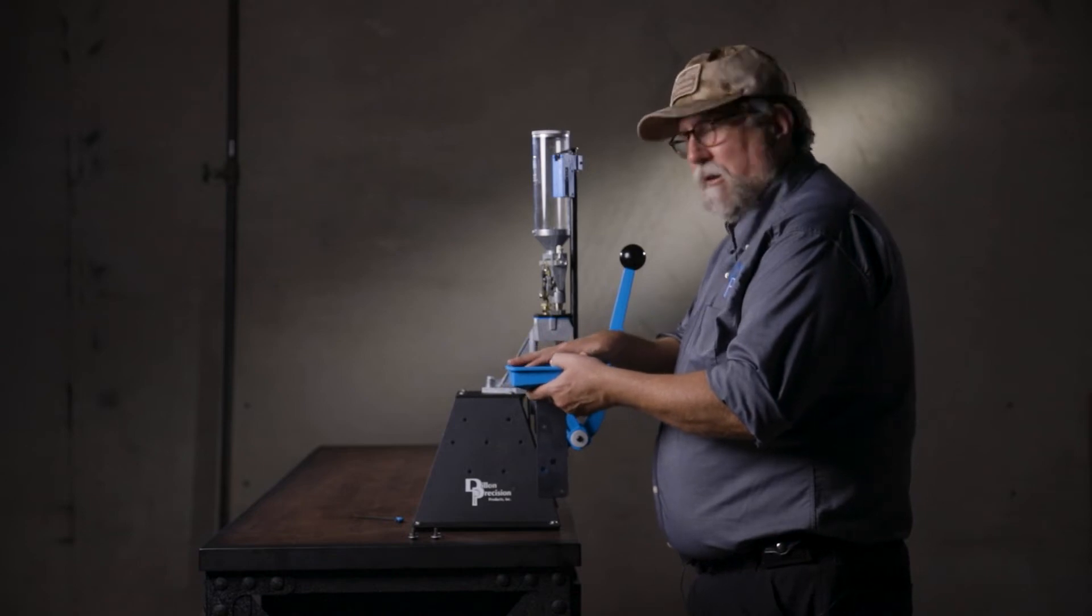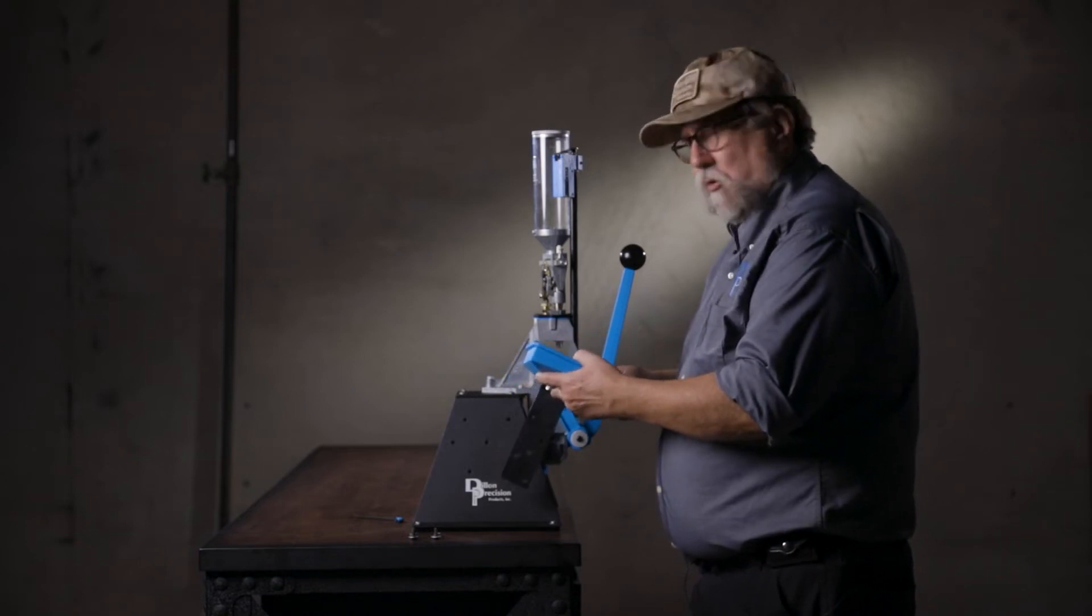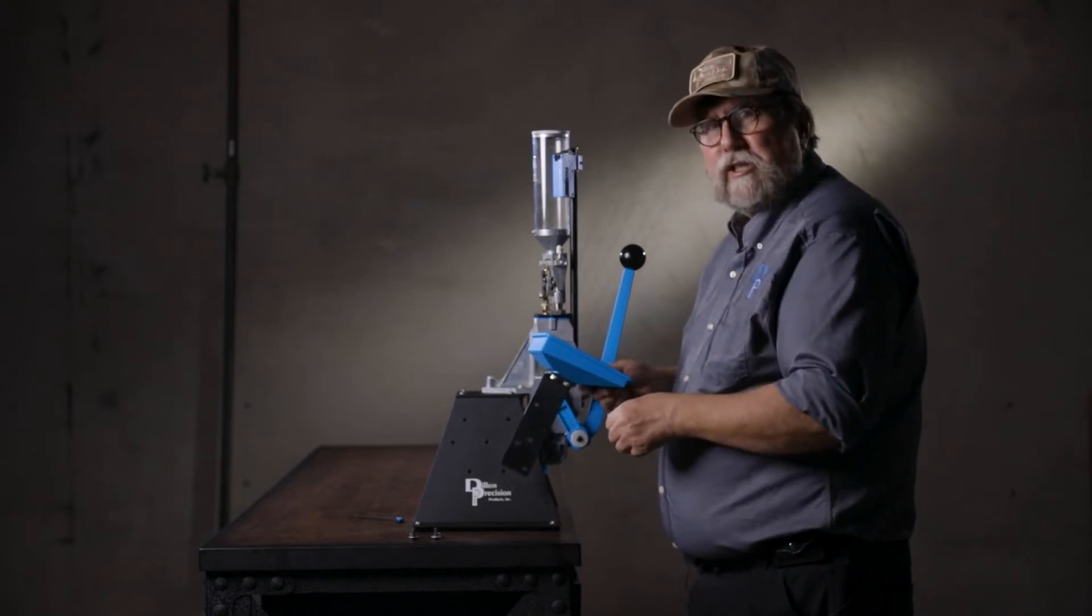The key thing to remember is the bullet tray is not going to be horizontal. It's designed to be tipped towards you so the bullets roll down so it's easy for your hand to grab.